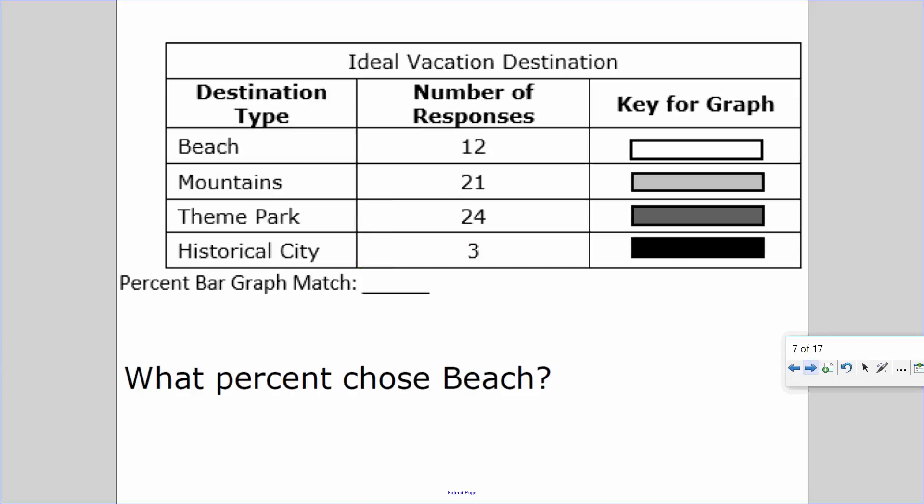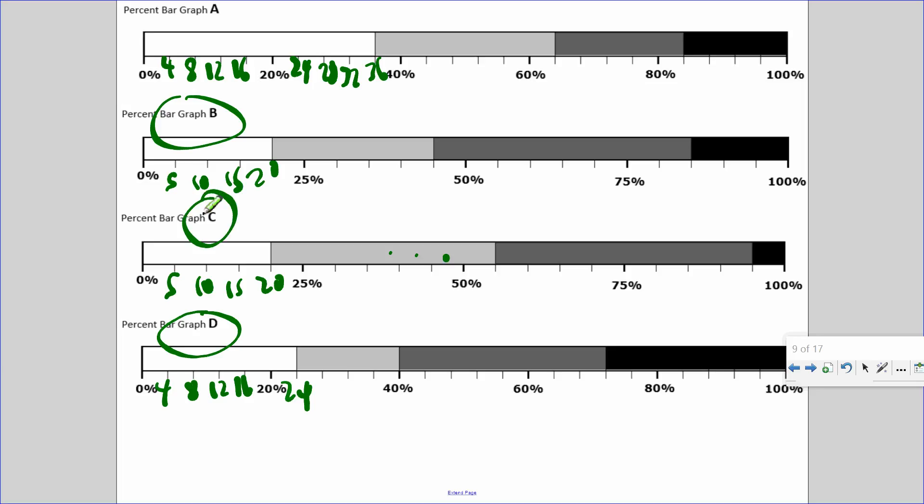Next one. Ideal vacation destination: beaches, mountain, theme parks, or historical cities. So they surveyed 60 responses. What percent chose beach? 12 people out of 60 chose beach. So how do you build 60 to 100? How do you break 60 to 12? Divide by 5. So 100 divided by 5 is 20%. So 20% chose beach. I thought we saw 20% earlier. Oh, it's right here. So the answer is C.